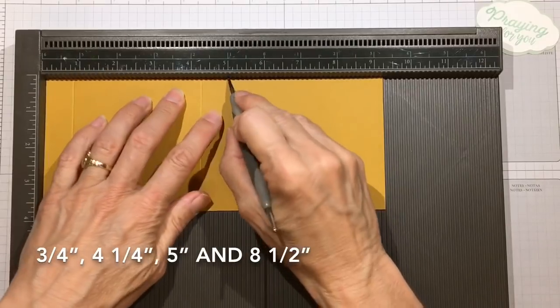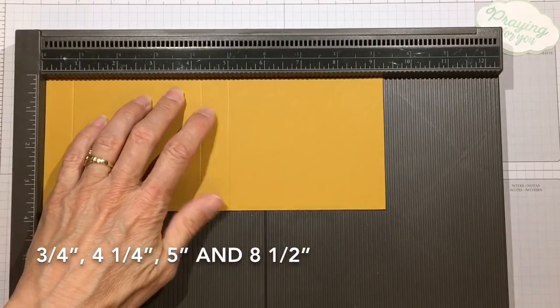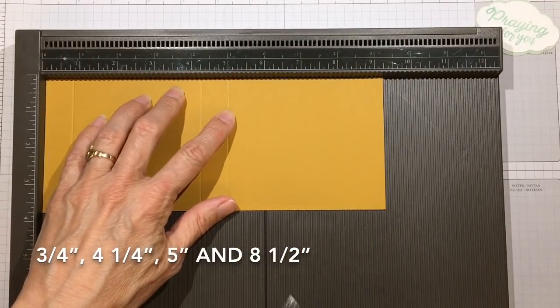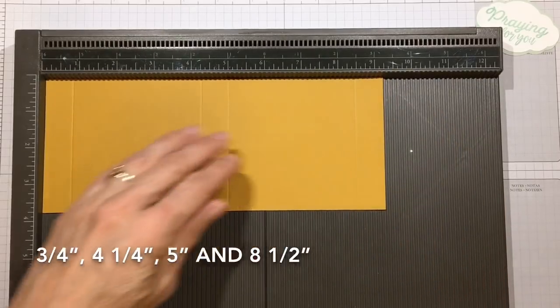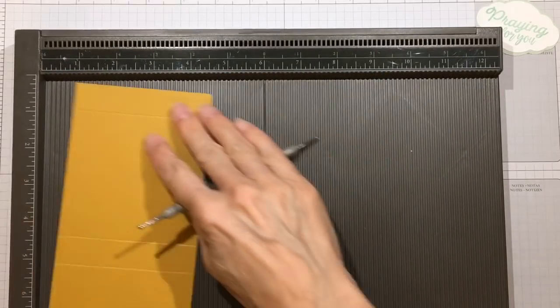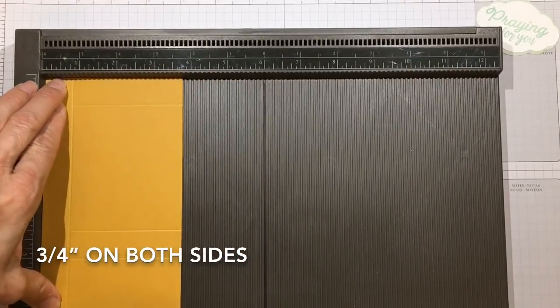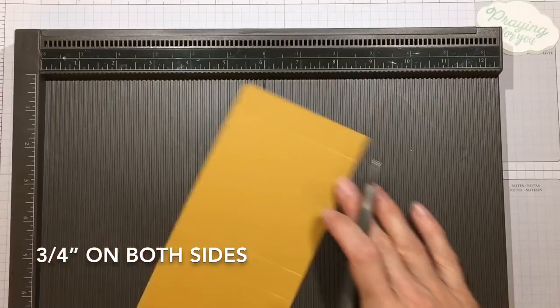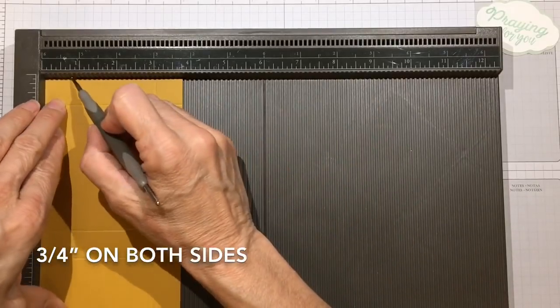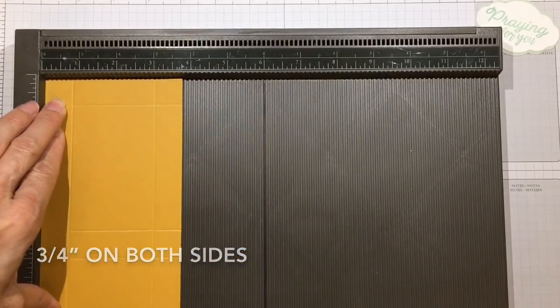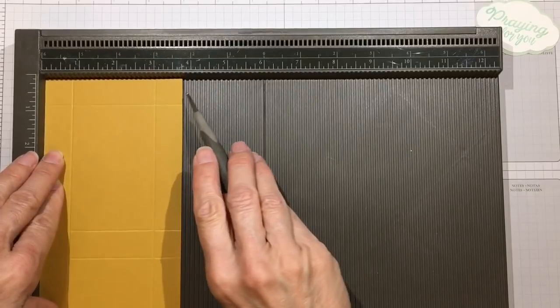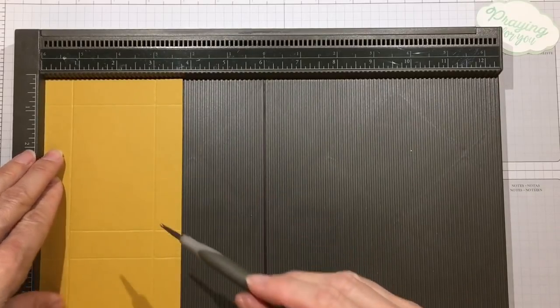Turn to the side and you want to score at 3/4 of an inch on each side. I put one side up and then turn the side around and put the other side up because that way I know if I didn't cut my cardstock exactly the right width that these scores would both be the same.